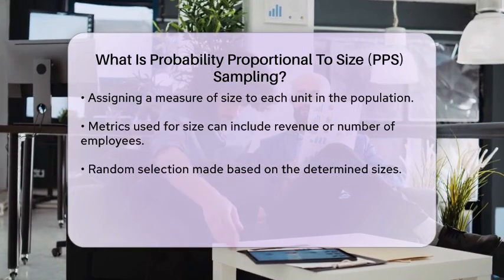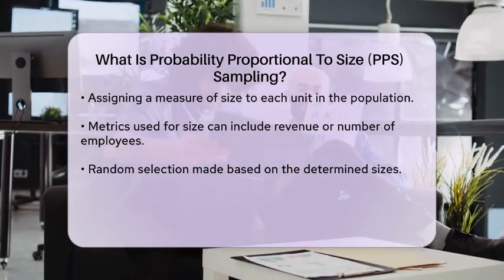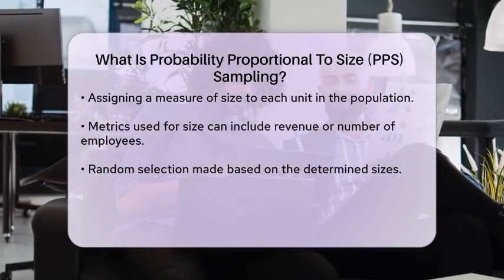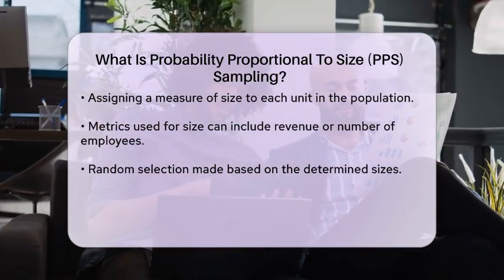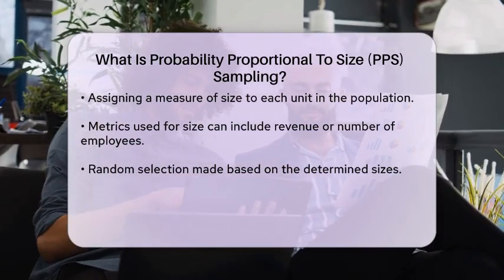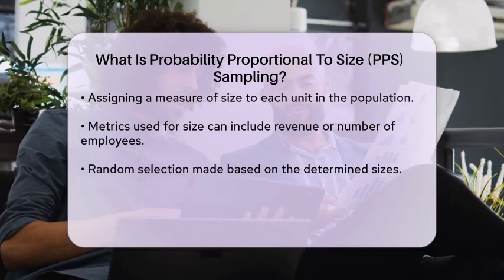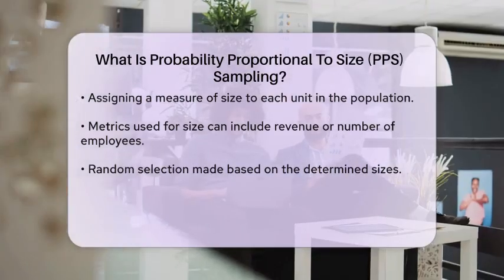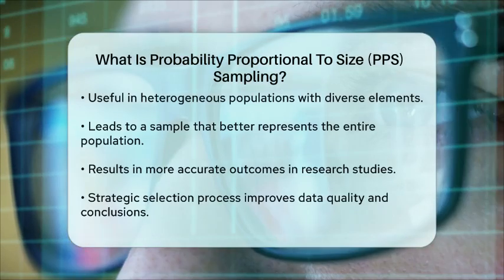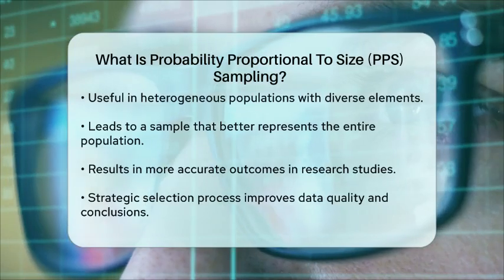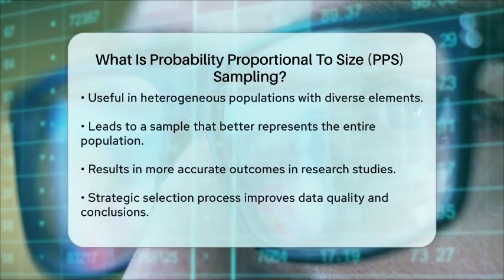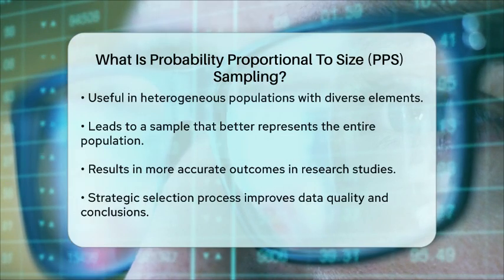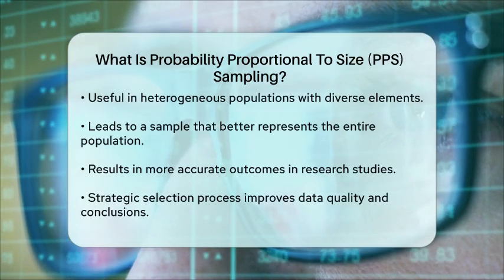This method is particularly useful in situations where the population is heterogeneous, meaning it consists of diverse elements. By using probability proportional to size sampling, researchers can obtain a sample that is more representative of the entire population, leading to more accurate results.